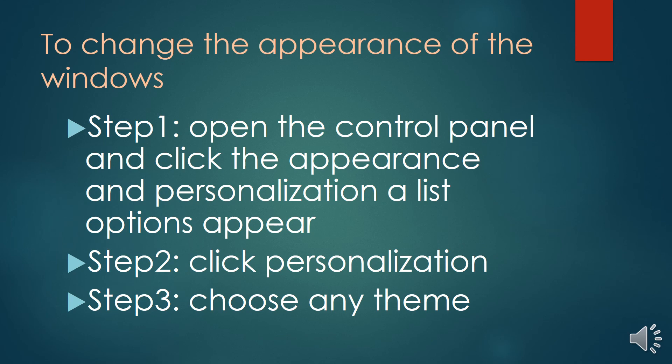Now let's check how to change the appearance of the window. Follow the steps. Step 1: open the control panel and click Appearance and Personalization — a list of options will appear. Step 2: click Personalization. Step 3: choose any theme and click on it.